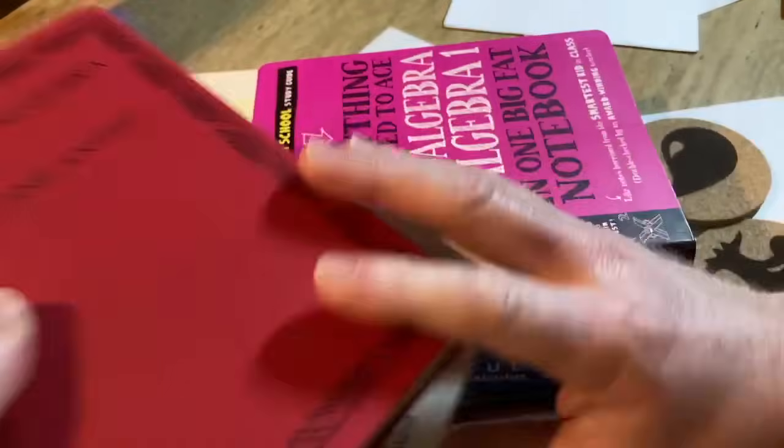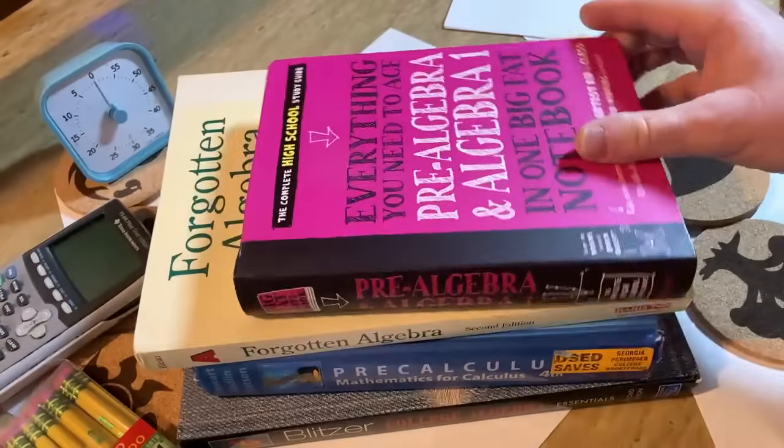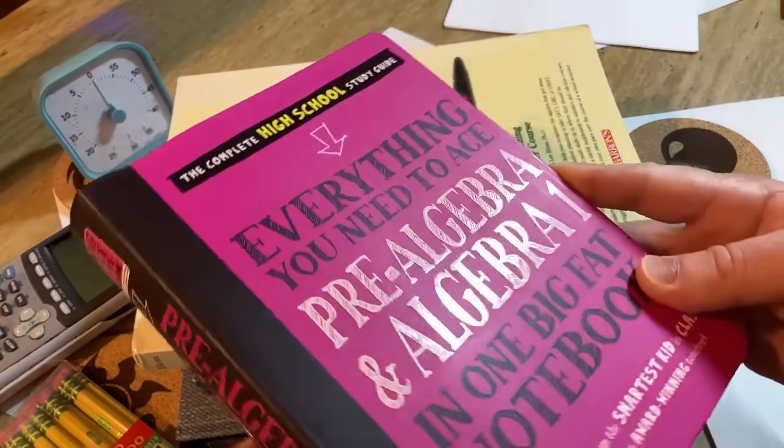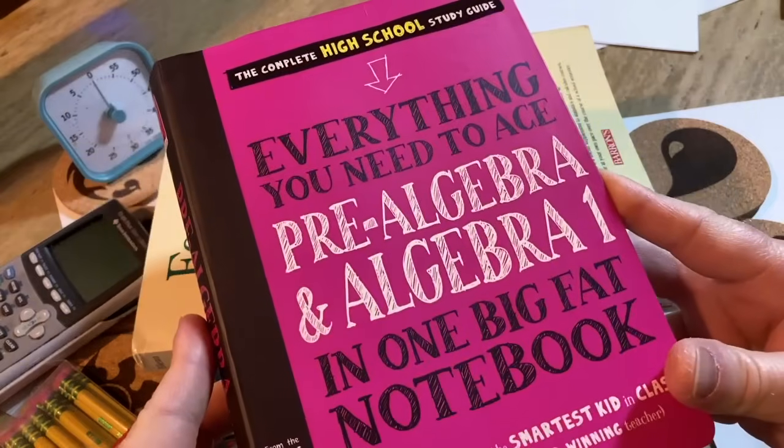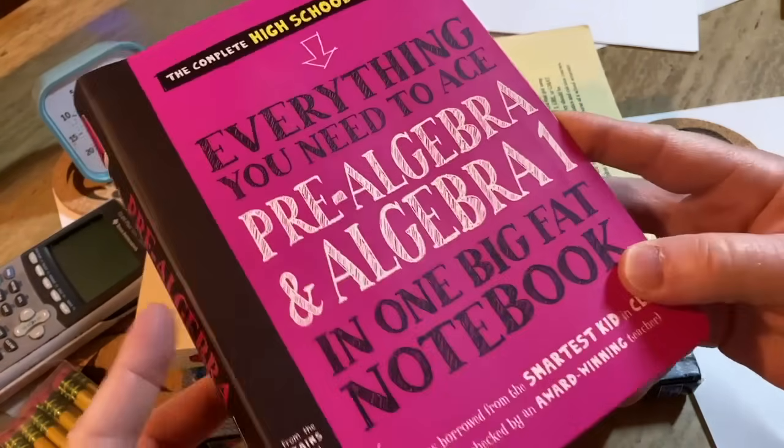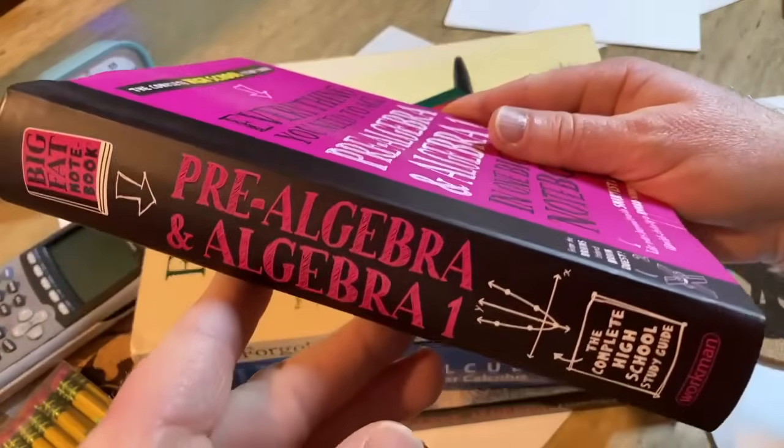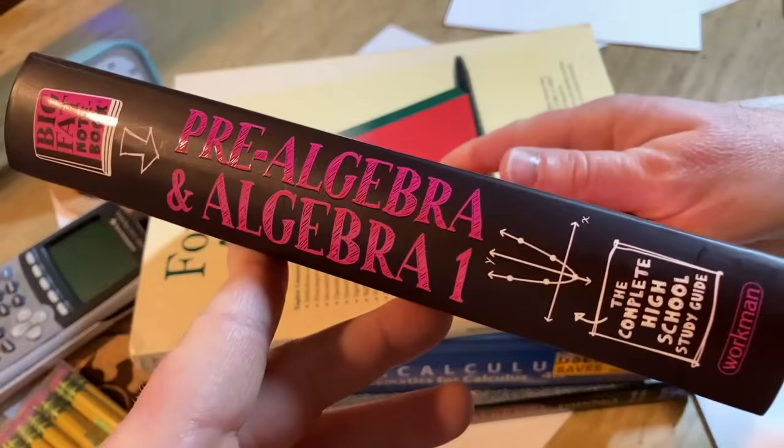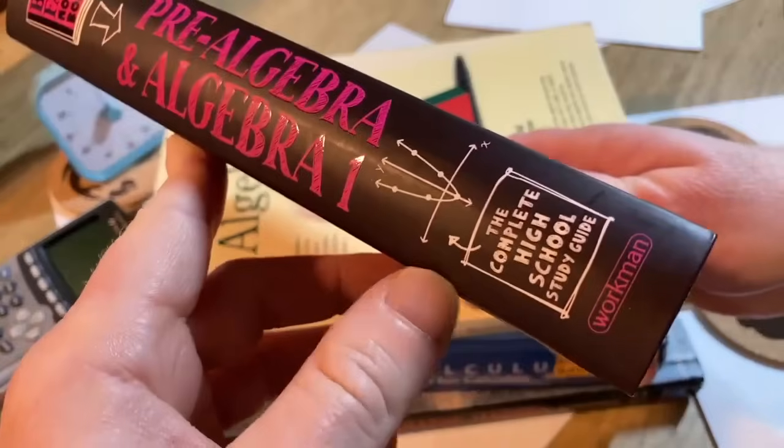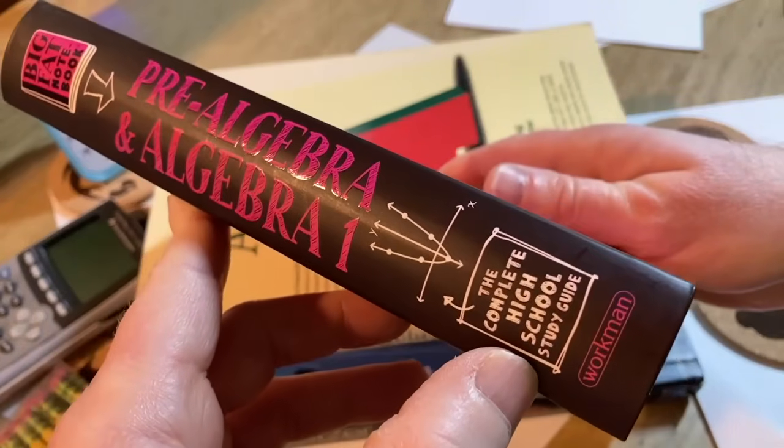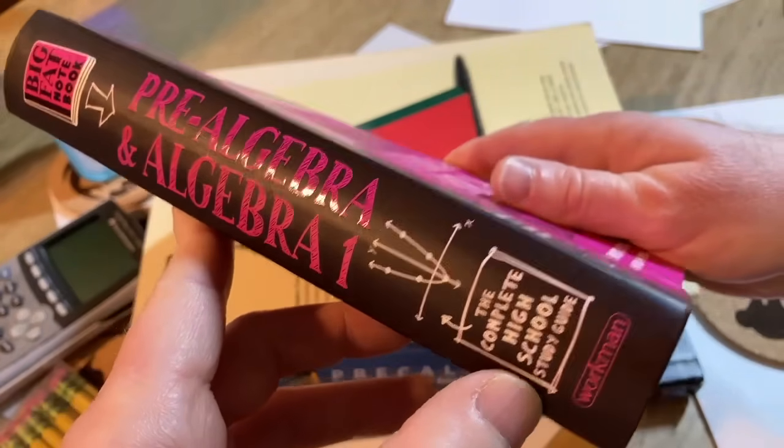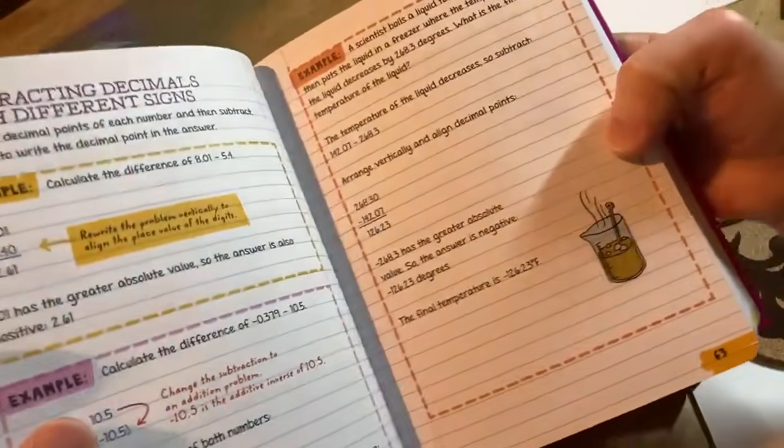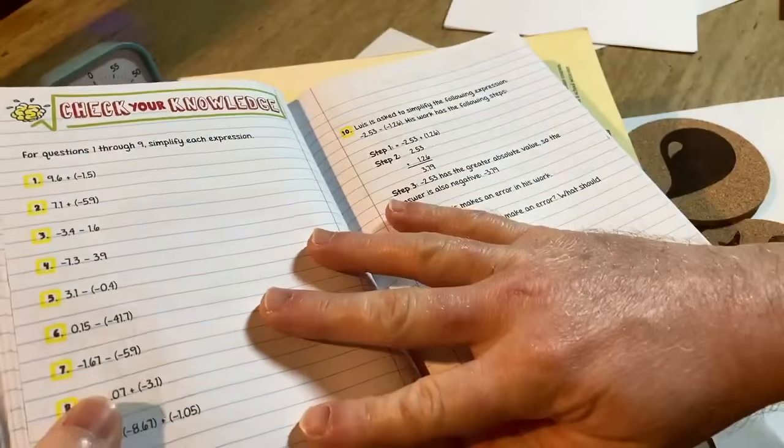So let's start with the very beginning. For people who are just getting started, there are two books I think that are widely available. They are inexpensive and they are very good. The first one is Everything You Need to Ace Pre-Algebra and Algebra 1 in One Big Fat Notebook. This is a book that I've talked about before on my Math Sorcerer YouTube channel. It's the complete high school study guide. It's got really fun pictures, good explanations. It's an excellent book.